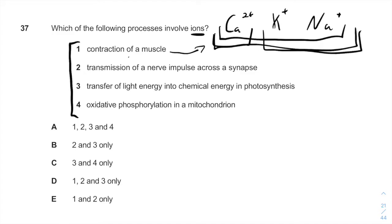The transfer of light energy into chemical energy, of course, involves the proton gradient. The oxidative phosphorylation in the mitochondrion also of course involves proton ions.